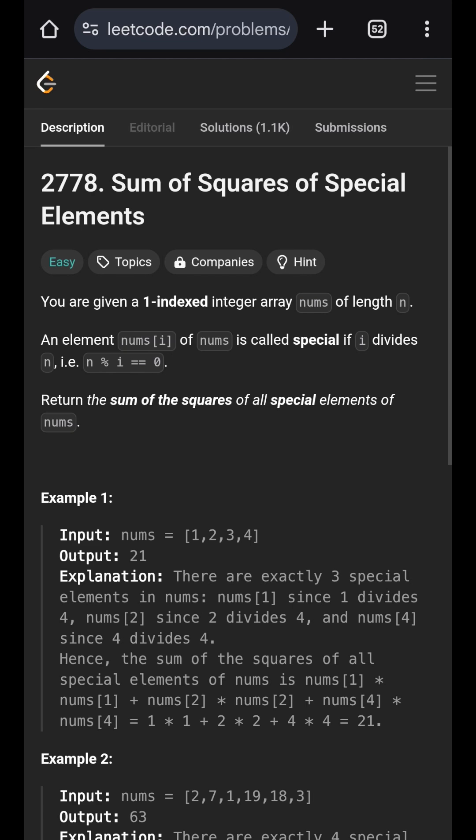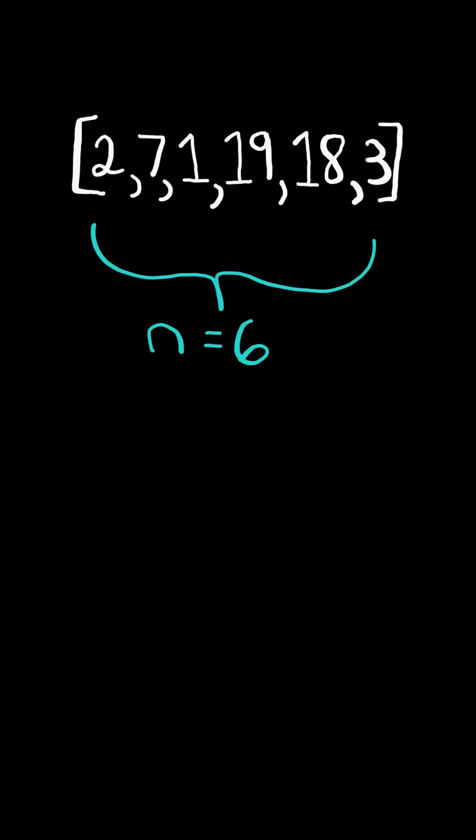Sum of squares of special elements. Given an array of size n, consider the indices counting from index 1.